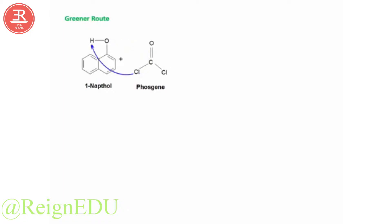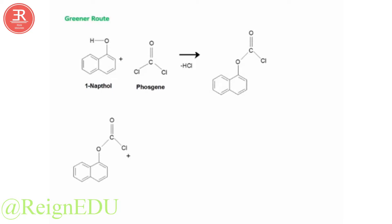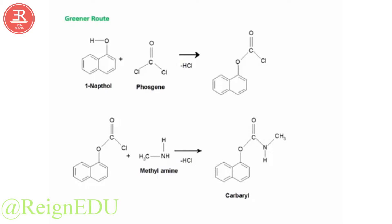In the greener route, 1-naphthol is treated first with phosgene. The lone pair on the oxygen attacks the positively charged carbon, Cl⁻ is released, the negatively charged chlorine attacks the hydrogen, and the lone pair on oxygen is retained. HCl is eliminated and we get the intermediate product. This is then treated with methylamine — the lone pair on nitrogen attacks the carbon, Cl⁻ is eliminated, negatively charged chlorine attacks the hydrogen, and the lone pair on nitrogen is retained. HCl is eliminated to give the final product, carbaryl.